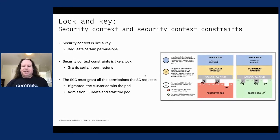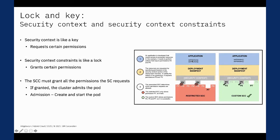A good way to envision the relationship between a security context and an SCC is like a key and a lock. In this example, the application is saying it needs permission to perform an action we'll call P2, and another action we'll call P5. So in the security context, we specify that the application requires P2 and P5 — that's the key. The SCC is like a lock that only allows keys with certain teeth. The restricted SCC only allows something we arbitrarily call P7, and it doesn't allow P2 or P5, so this SCC will not allow this security context to deploy.